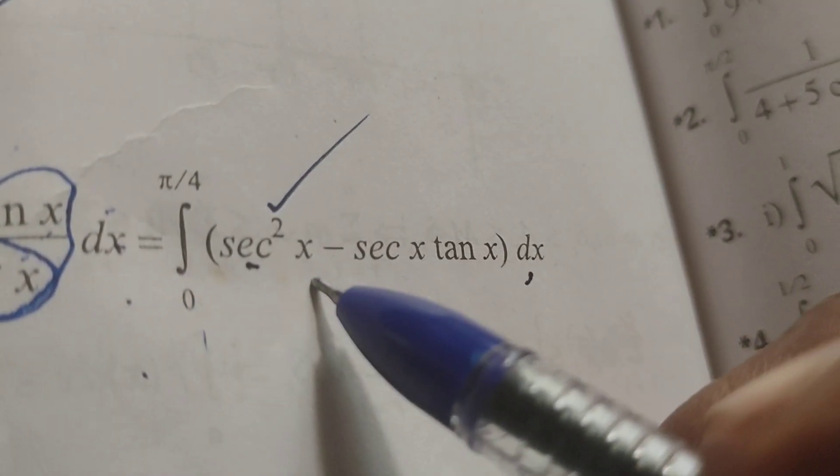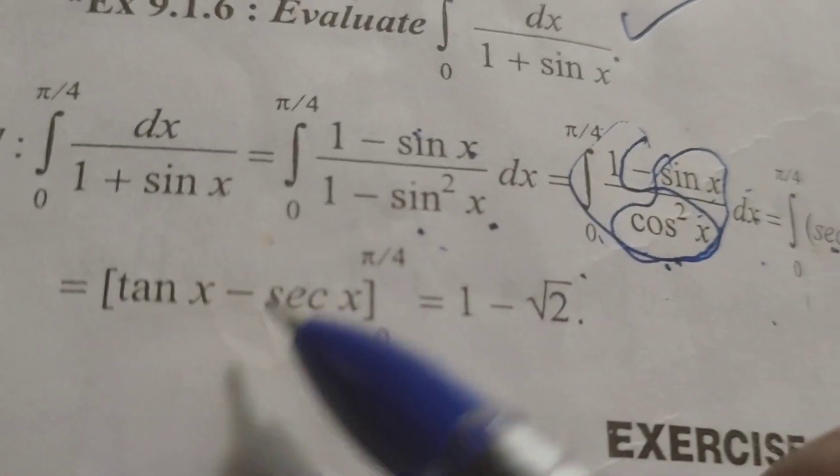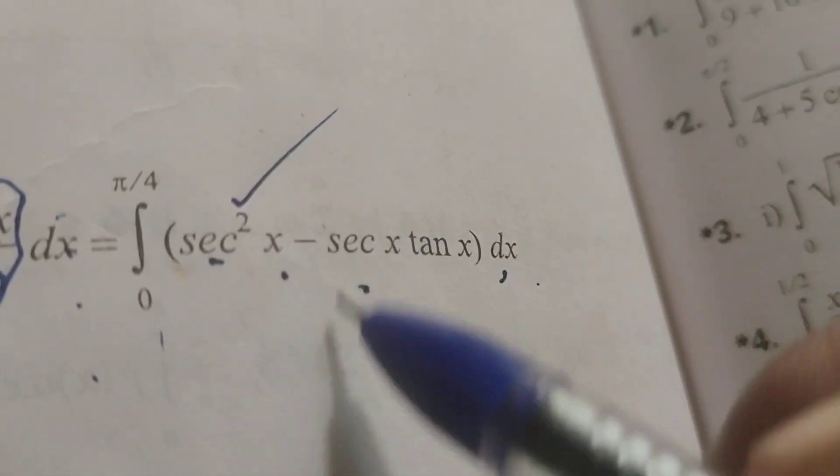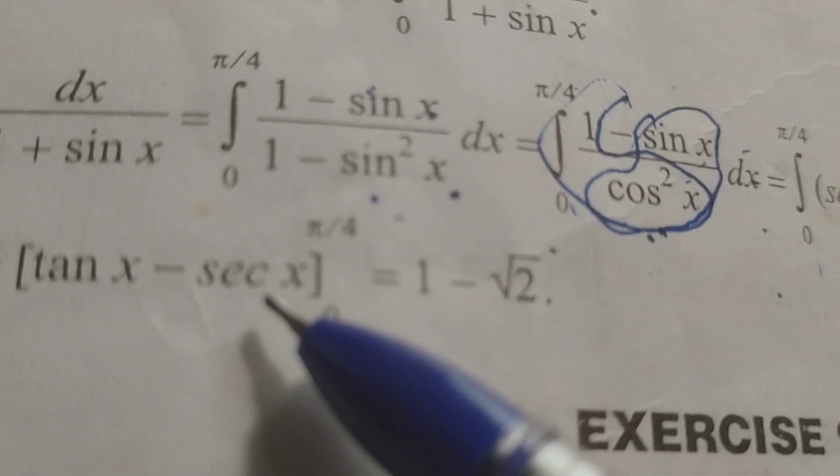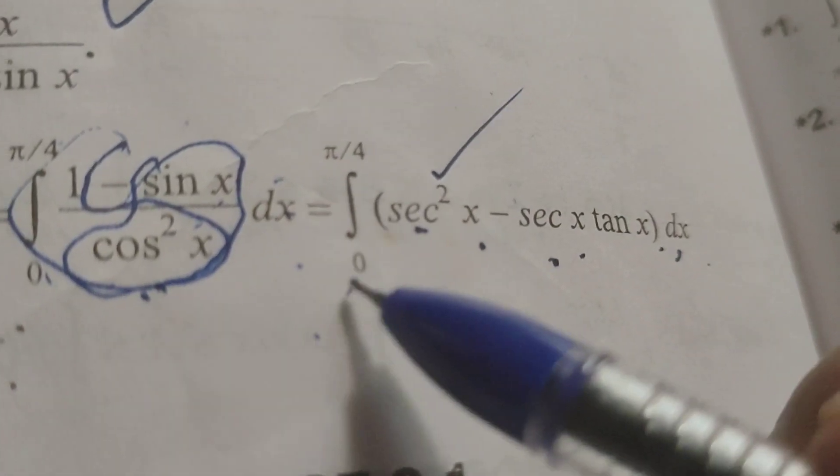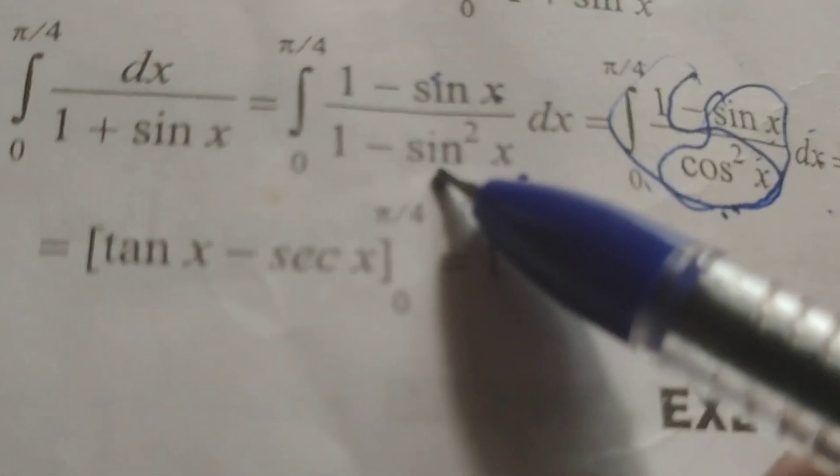Integral of secant square x dx is tan x minus integral of secant x tan x is secant x. After substituting limit 0 to pi by 4.